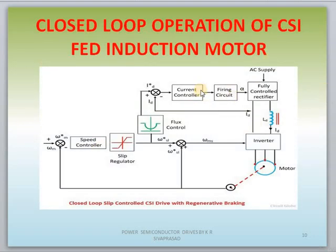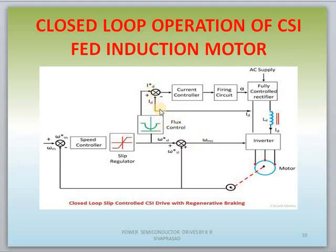This is the closed-loop operation of CSI fed induction motor, similar to synchronous motor drives. The actual speed of the machine is compared with the reference value, and an error signal is generated. The error signal passes through the speed controller, then a slip regulator monitors the slip speed value. Slip speed is compared with actual speed to produce the required speed control, and the same signal passes through flux control to control the Id value.